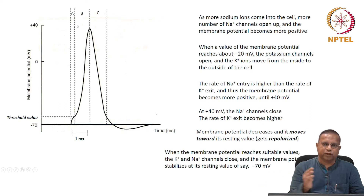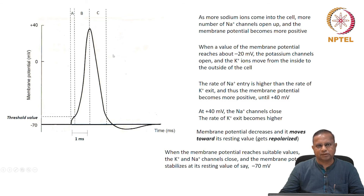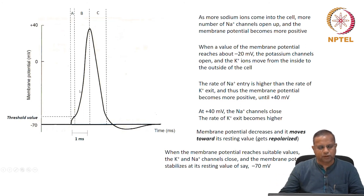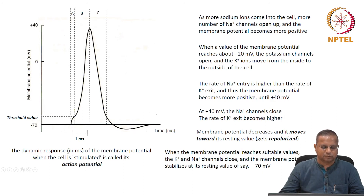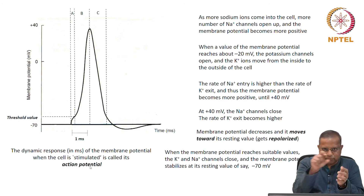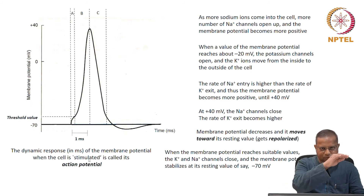This is typically what happens when sodium and potassium move in and out of the cell. The movement is initiated by the impulse received by the cell. This dynamic response, typically about 3 to 4 milliseconds, of the membrane potential when the cell is stimulated is called the action potential. This change in membrane potential when the cell is stimulated is the action potential, and it occurs at one point on the membrane surface of the cell.